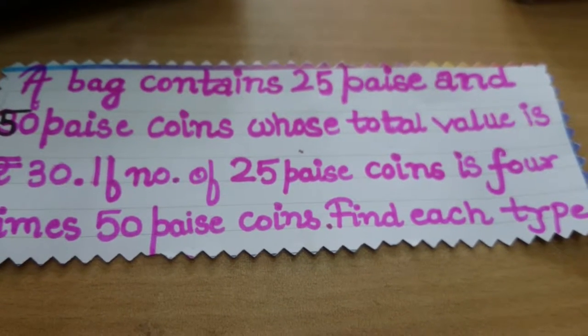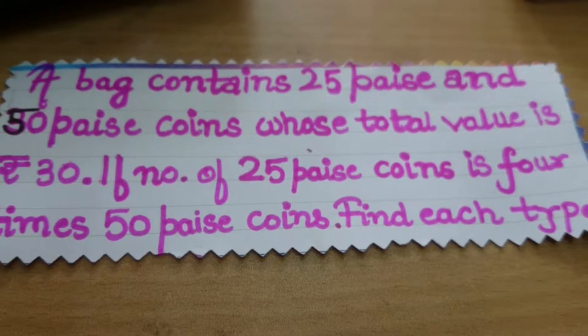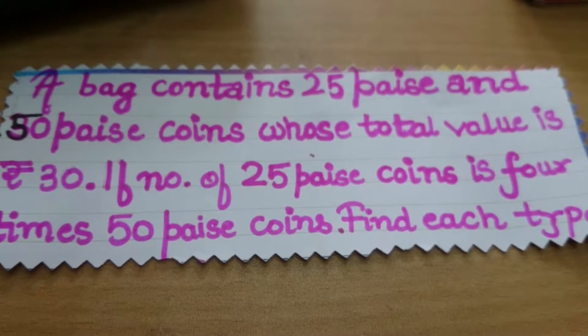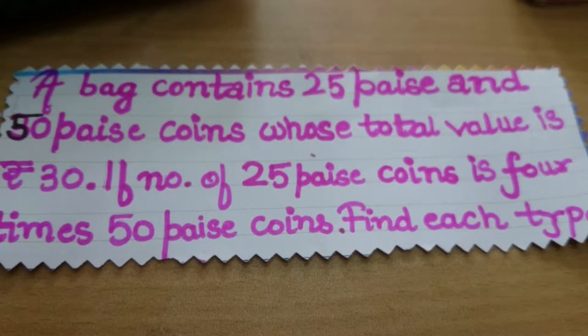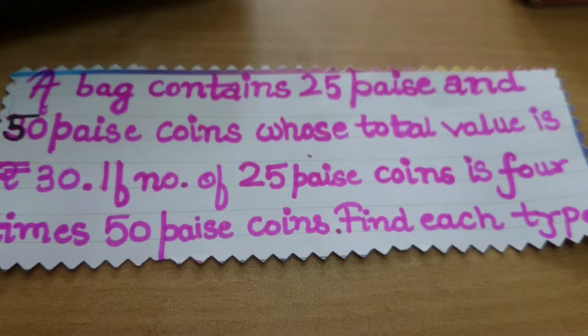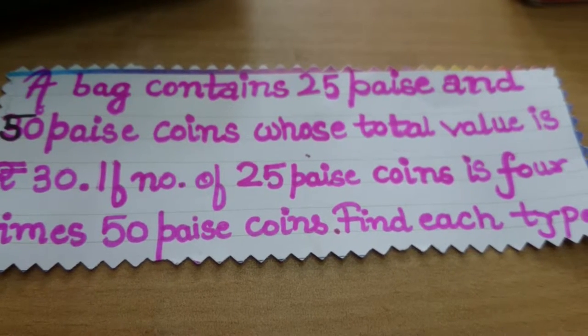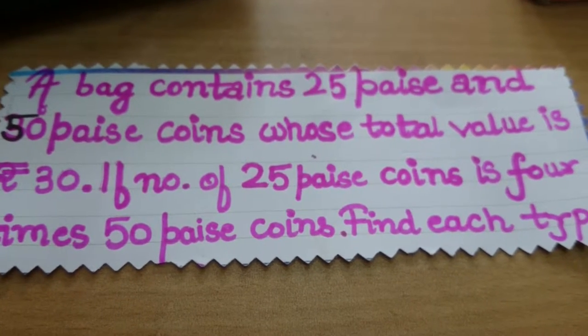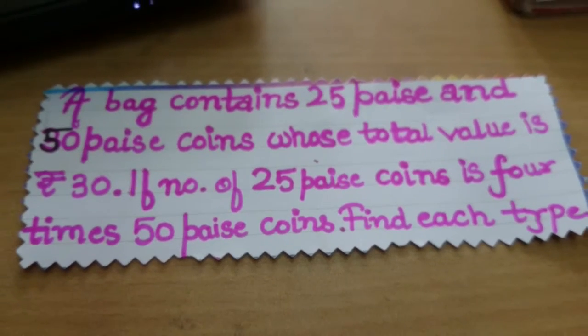A bag contains 25 paisa and 50 paisa coins whose total value is Rs. 30. If the number of 25 paisa coins is 4 times 50 paisa coins, find the coins of each type.